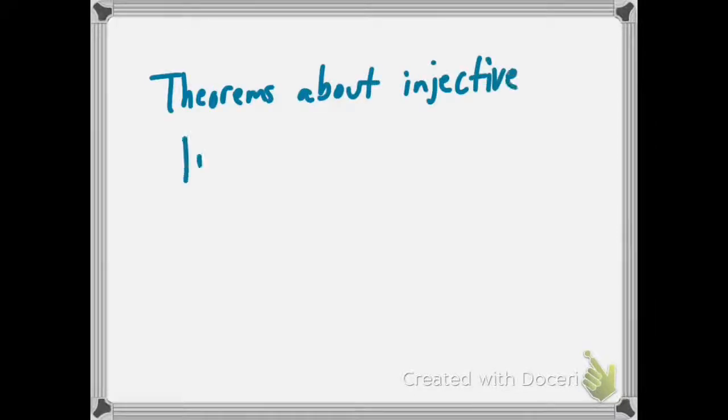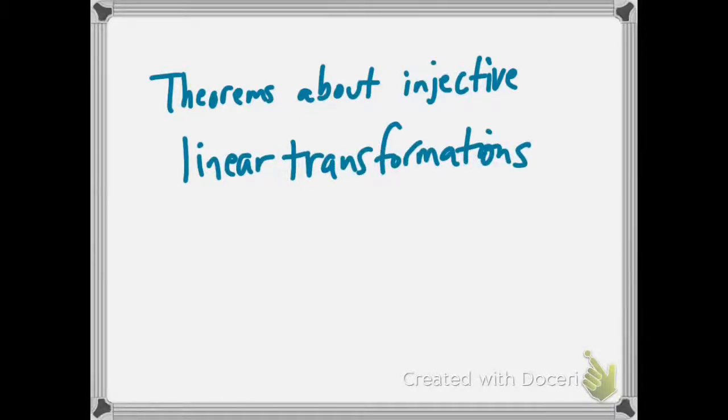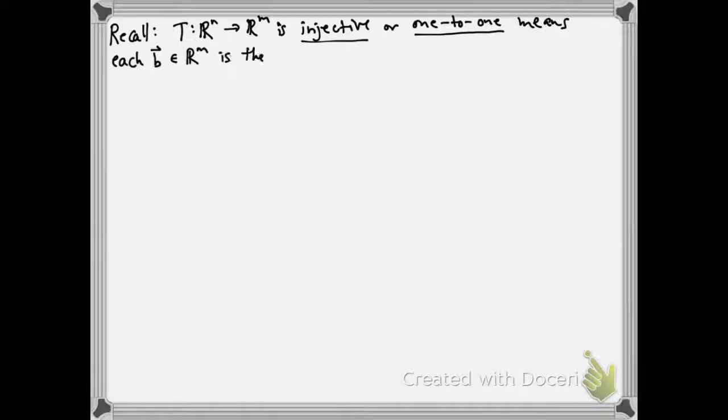Let's go over some theorems about injective linear transformations. These are called one-to-one linear transformations in the book. So recall a map from R^n to R^m is called injective or one-to-one. That means every vector in R^m is the image of at most one vector in R^n.